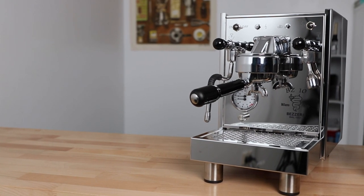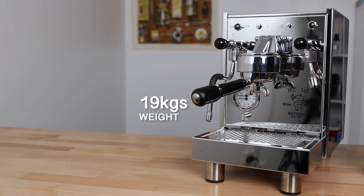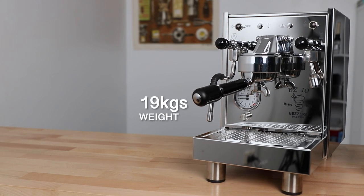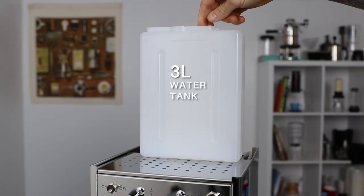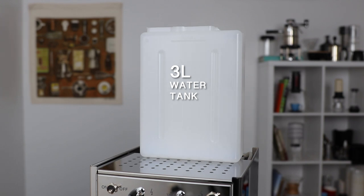Dressed in polished stainless steel, don't be fooled by the size of this machine as it's still around 19 kilograms in weight and boasts a huge top-loading three liter water reservoir, which is one of the largest water tanks for any home espresso machine.